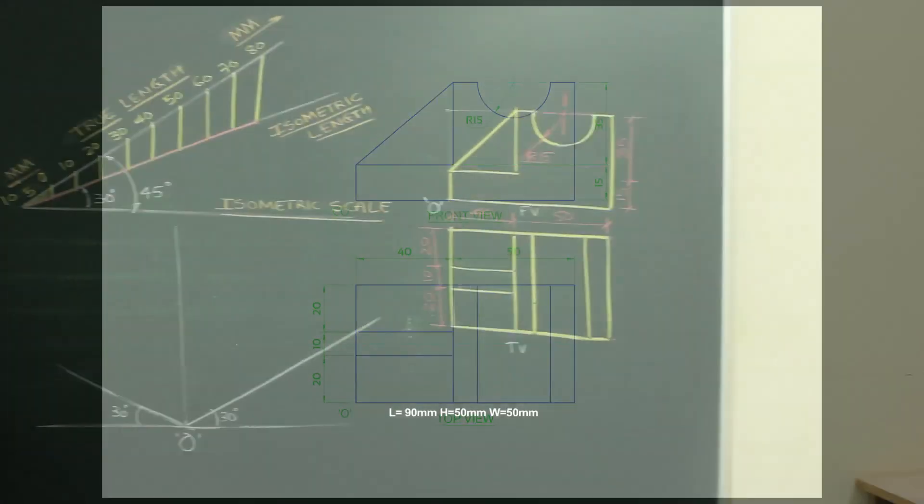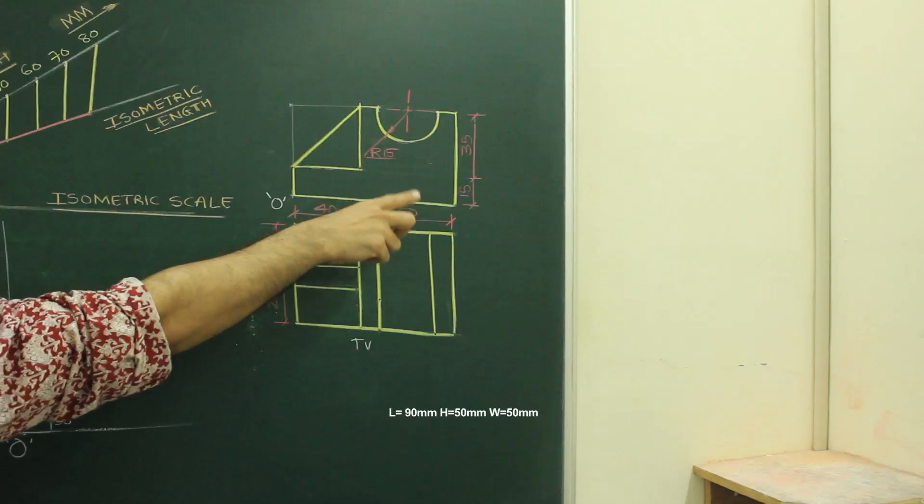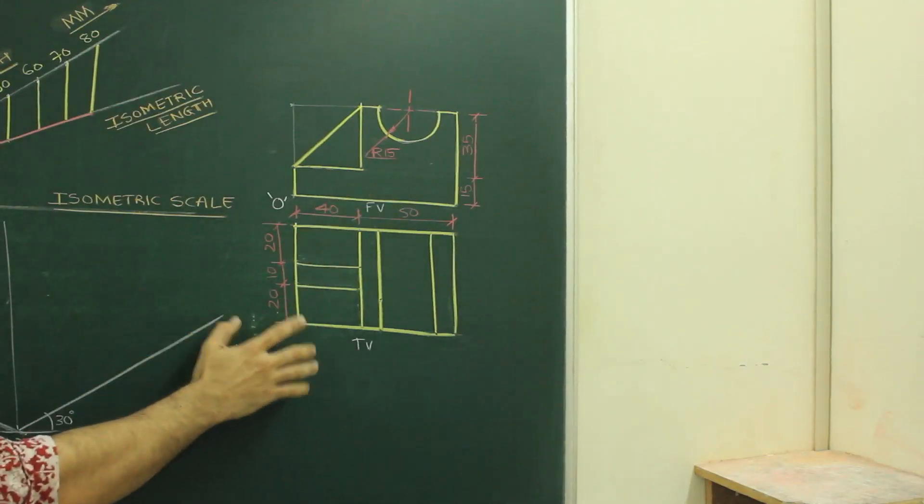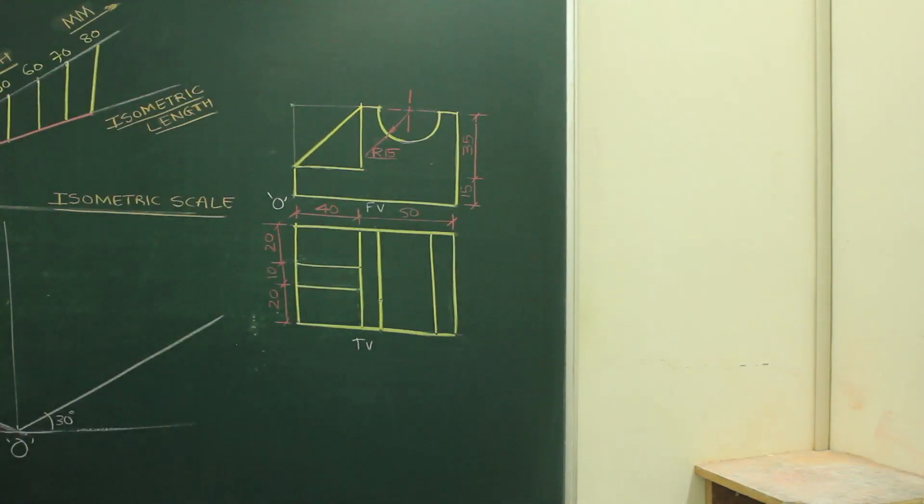In this sum, length is 90, height is 50 and width is 50. Now we have to draw this sum using isometric scale.